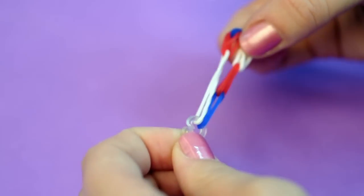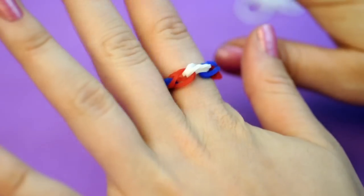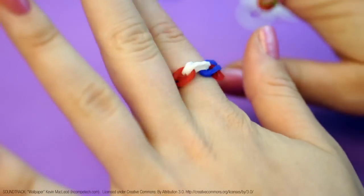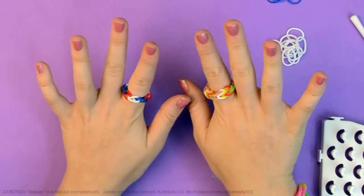Hook the C-clip through the first band on the design and your ring is now ready to wear. View our other how-to videos for more cute fun loom jewelry designs.